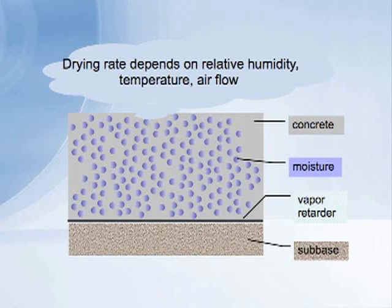Underneath the slab, there's a vapor retarder. The idea with the vapor retarder is it cuts off communication of moisture between the subbase and the concrete, so there's very little passage of moisture from the ground up into the slab. We're only concerned with the drying out of the concrete itself. At the top of the picture, we see a bubble that indicates the drying rate of the concrete at the surface depends on three things.